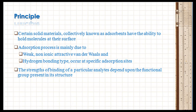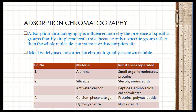For example, hydroxyl groups and aromatic groups tend to increase interaction with the adsorption surface, whereas aliphatic groups tend to differ in their interaction with the adsorption surface. Adsorption chromatography is influenced more by the presence of specific groups than simple molecular size, because only specific groups — rather than the whole molecule — can interact with the adsorption site.